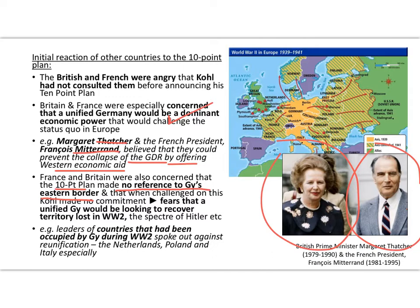France and Britain were also concerned that Kohl's ten-point plan made no reference to Germany's eastern border. When they challenged Kohl about this, he dodged the question, which made Thatcher and Mitterrand suspicious. In a sense they were backward-looking, still trapped in the past, thinking about World War II and the last time there was a strong dominant Germany in the centre of Europe under Hitler.